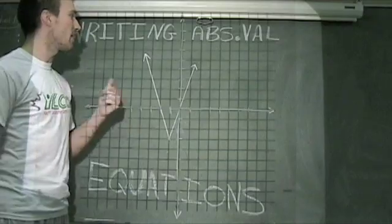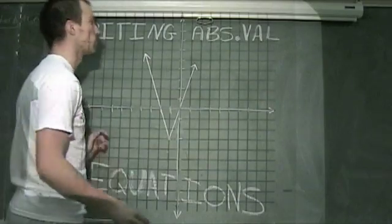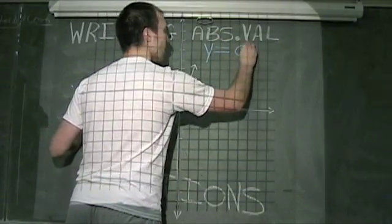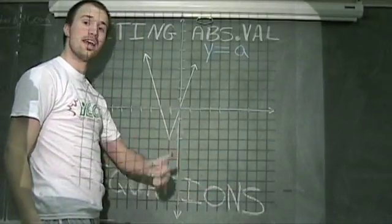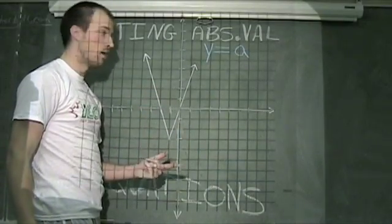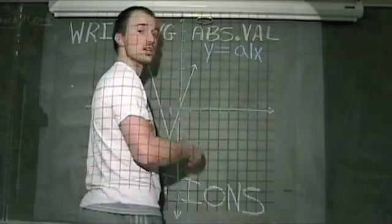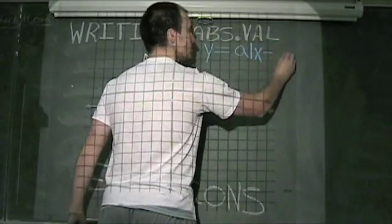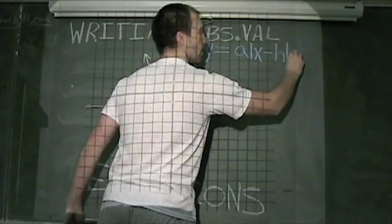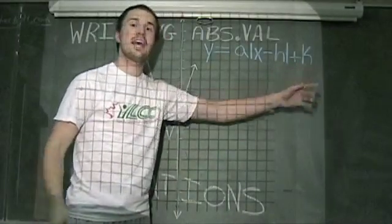So the first thing that I'm going to write out is the general form of the equation for absolute value functions, which is y equals some value a, which stands for our slope. It tells us how the absolute value graph opens up or down, as well as the steepness. So a times the absolute value of x minus a value h, plus a value k. h,k is the vertex, that's the corner piece.